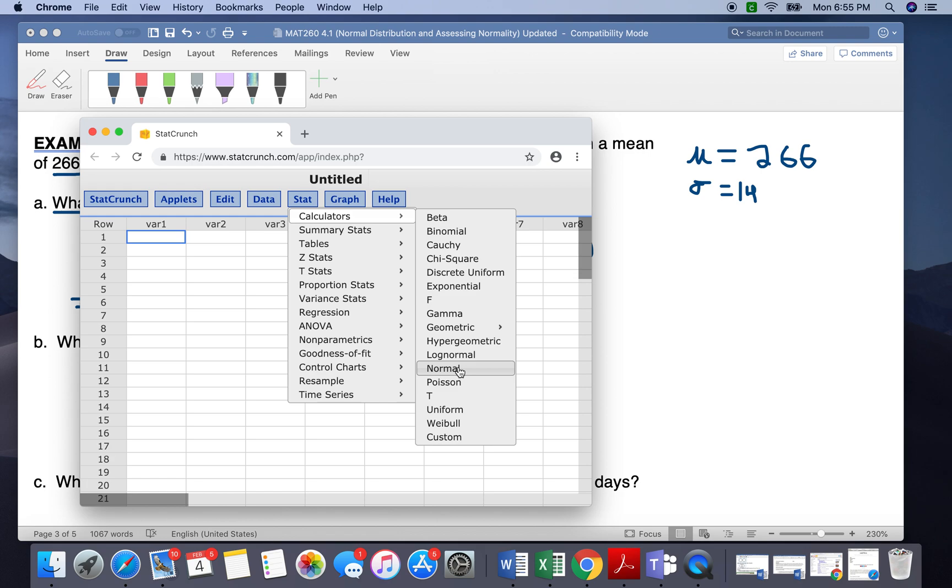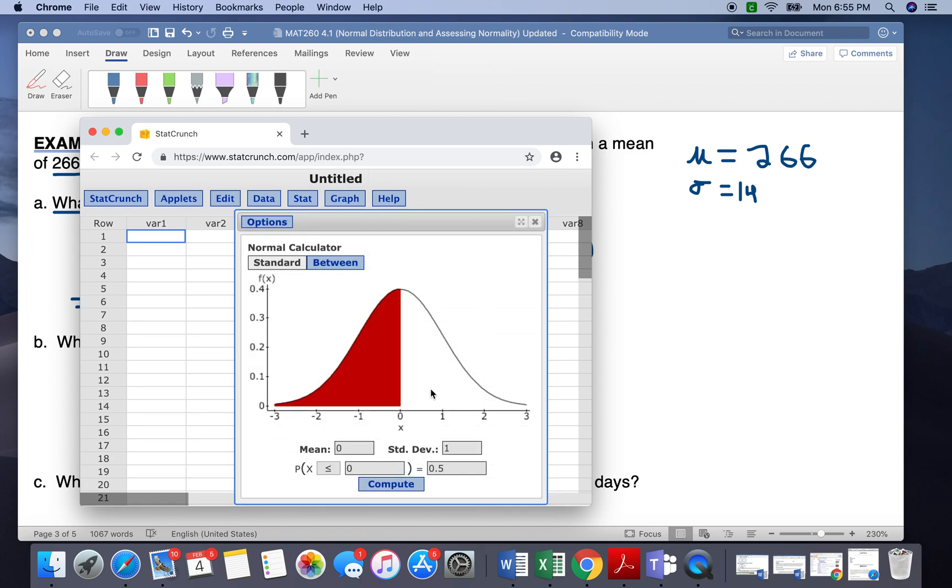So Stat, Calculator is normal, and then we want to put in our mean, which we said was 266, and we want to put in our standard deviation, which was 14.